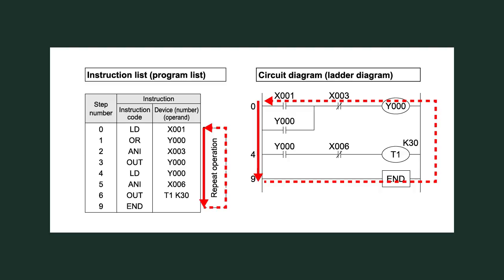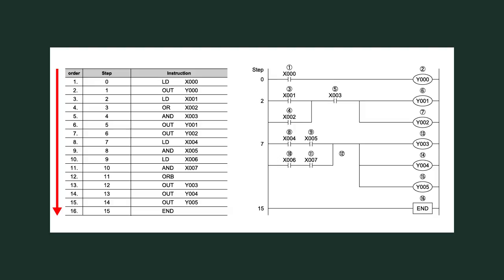Programs are executed in step number order in the PLC. In the program list, it is operated from up to down. But in the ladder program, it is operated left to right, then up to down.